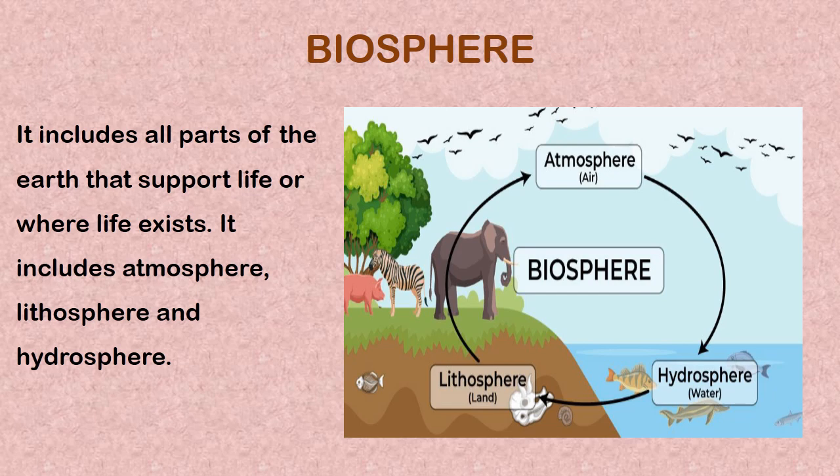We'll also look at the concept of biosphere. The biosphere includes all parts of the earth that support life or where life exists. It includes the atmosphere — the air — the lithosphere — the land — and the hydrosphere — water. You find birds in the air, land animals like elephants and zebras on land, and fishes and other organisms living in water.